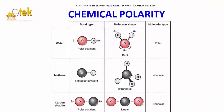Here is the bond type: polar covalent, non-polar covalent, and polar covalent. For water, methane, and carbon dioxide, we are trying to show the molecular bond and the shape. Water has a bent shape, methane is tetrahedral, and carbon dioxide is linear. The molecular type for water is polar, whereas methane and carbon dioxide are non-polar.